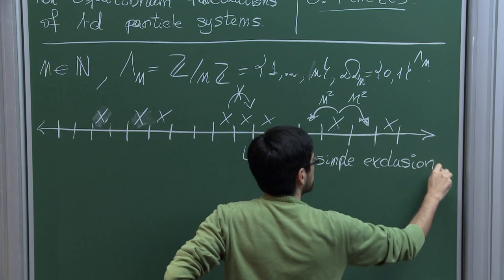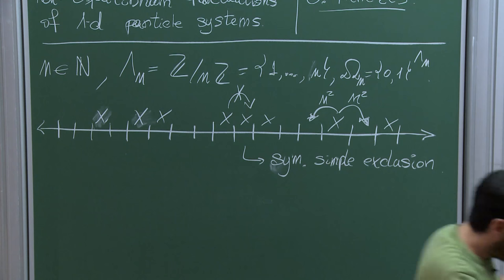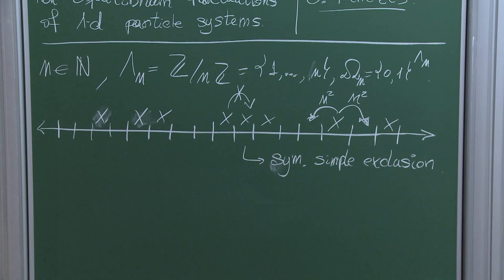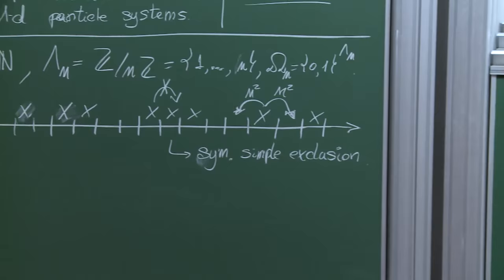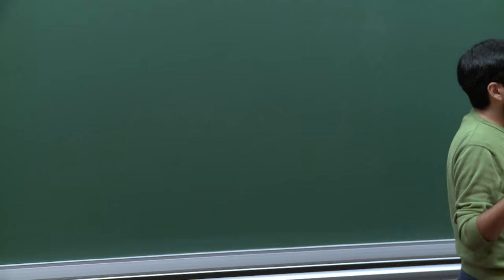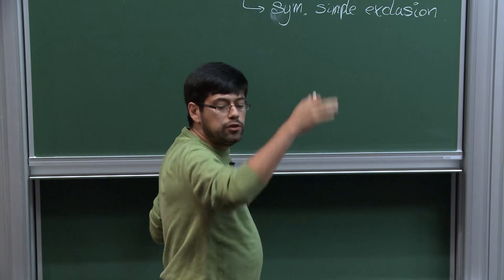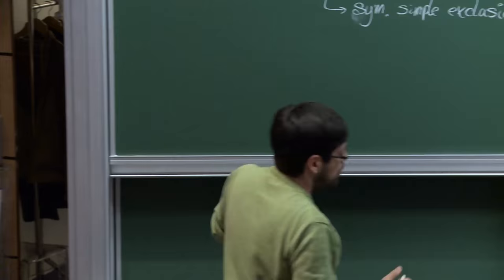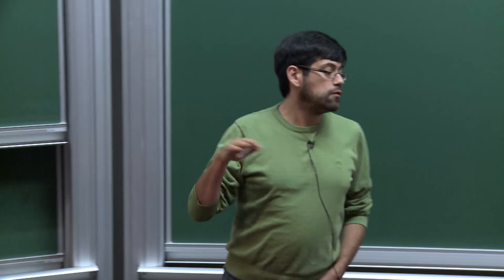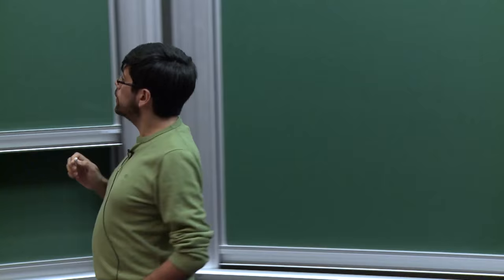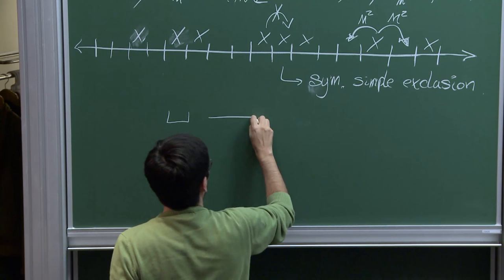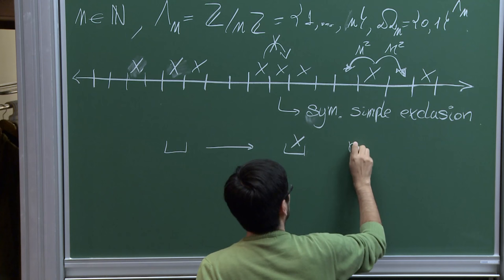We consider periodic boundary conditions. On top of this dynamics, I'm going to add something else, because as Thierry mentioned this morning, this system has nice product invariant measures and is reversible with respect to them. To introduce the non-reversible, non-equilibrium feature, we need to do something. One thing we can do is add creation and annihilation of particles in a translation-invariant way.